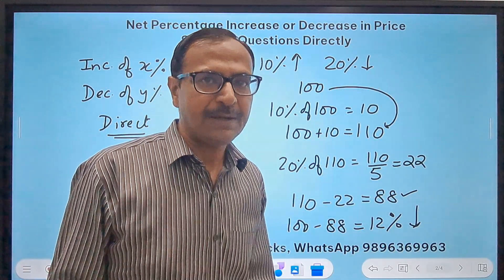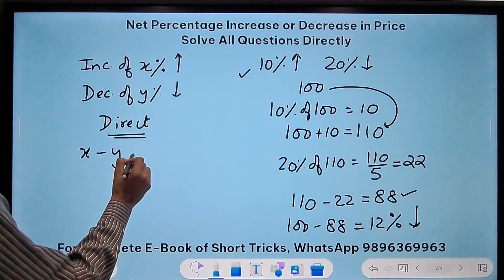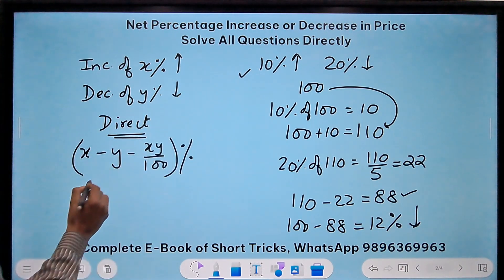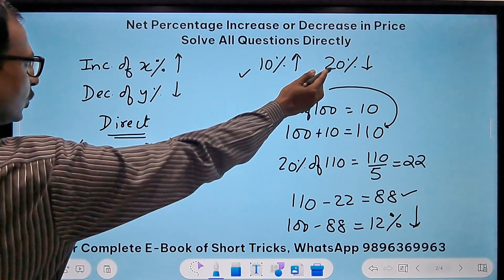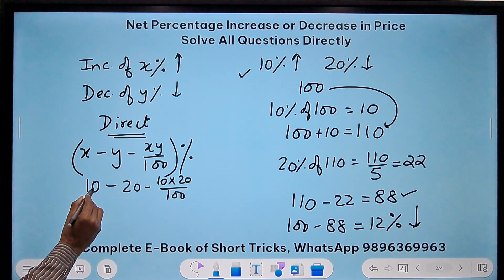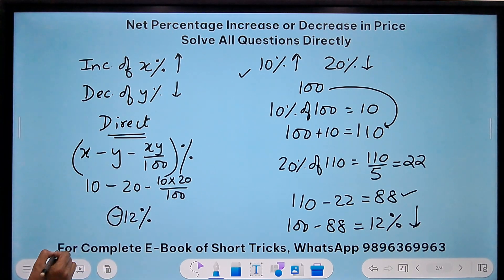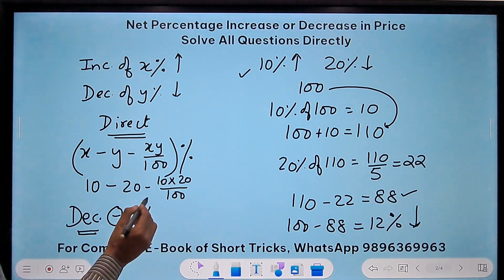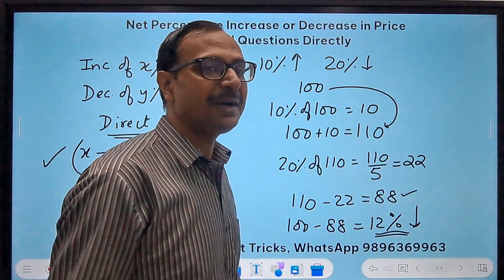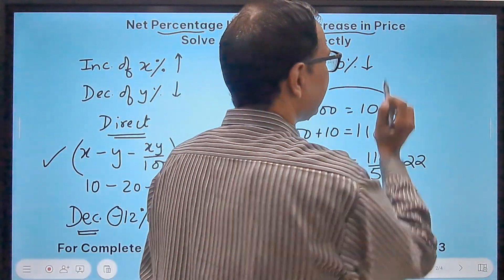Let's get on with the short trick. I can do x minus y minus xy upon 100 in this case. Look at the magic: x is 10 percent, so 10 minus 20 minus 10 into 20 upon 100. This gives a negative value: 10 minus 20 is minus 10 and minus 2 is minus 12 percent. What does minus indicate? Minus indicates decrease, so 12 percent decrease is your answer. See, same result. This is the second short trick for finding the net percentage increase or decrease.